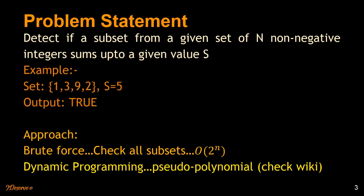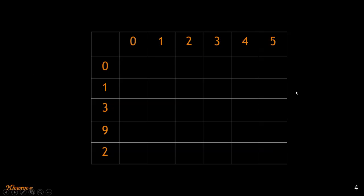In the dynamic programming solution we have a matrix. The columns represent the values in the given set — so in the given set we have {1, 3, 9, 2} — and we also add one more value, 0, which represents an empty set. The rows represent the target sum values.